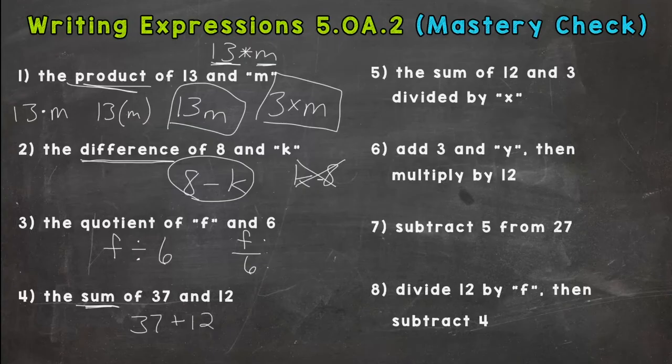The sum of 37 and 12. Sum, 37 plus 12, so addition for the word sum. All right, on our right side here it looks like we have a couple of two-step expressions.